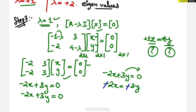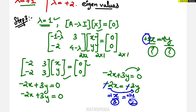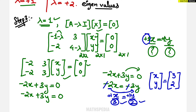The negatives cancel, and rearranging gives x divided by 3 equals y divided by 2. Since the coefficients of x and y are both positive 1 in this form, whatever is below x and y forms the eigenvector. So the eigenvector [x; y] equals [3; 2]. This is the eigenvector corresponding to eigenvalue lambda equals 1.